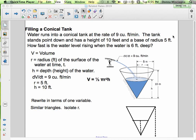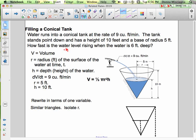Welcome to filling a conical tank. Water runs into a conical tank at the rate of nine cubic feet per minute. The tank stands point down and has a height of 10 feet and a base radius of five feet. How fast is the water level rising? So we're dealing with volume here.